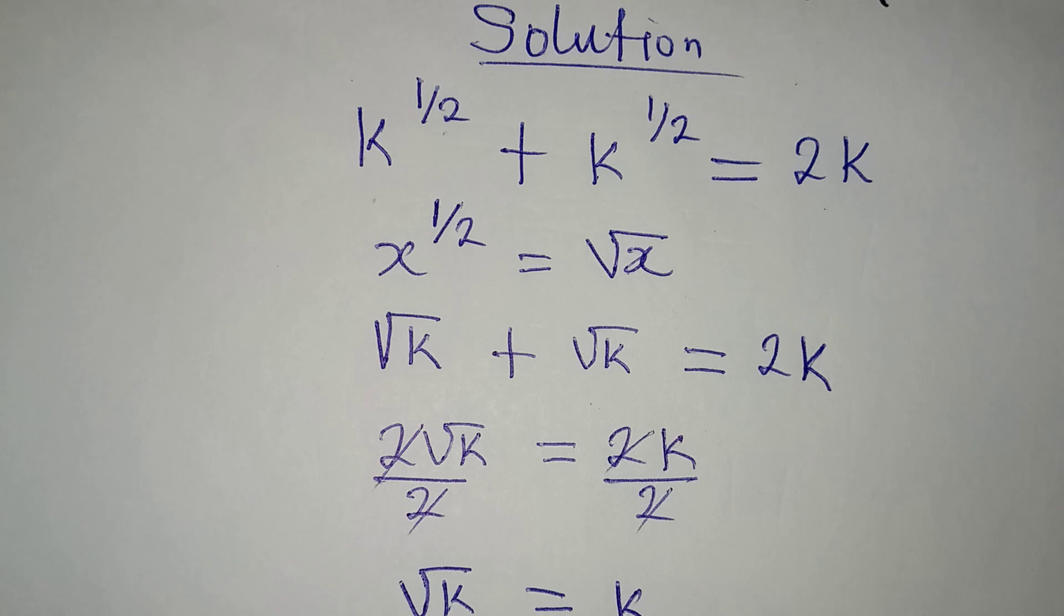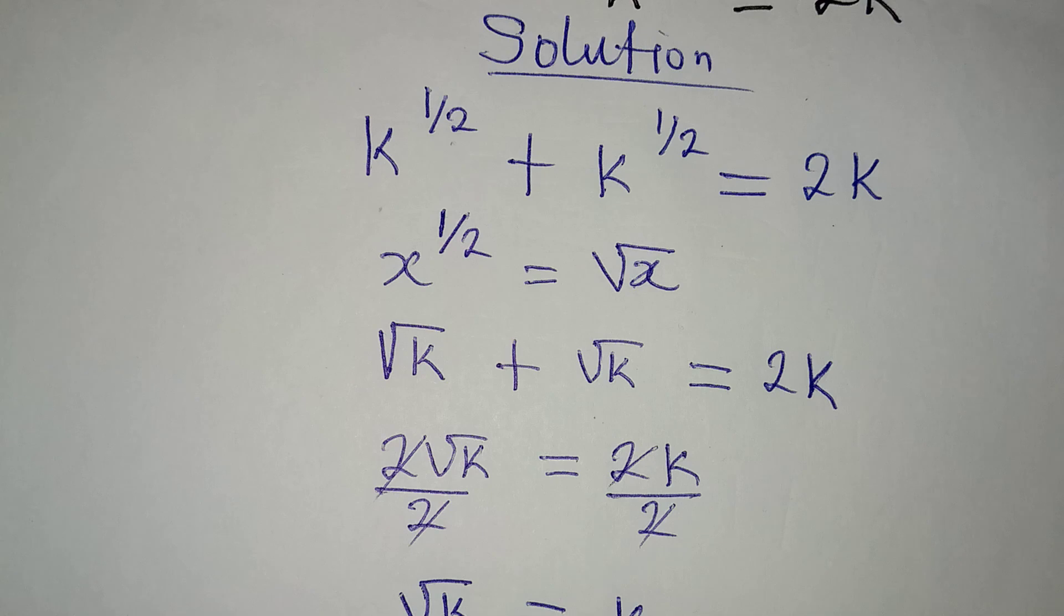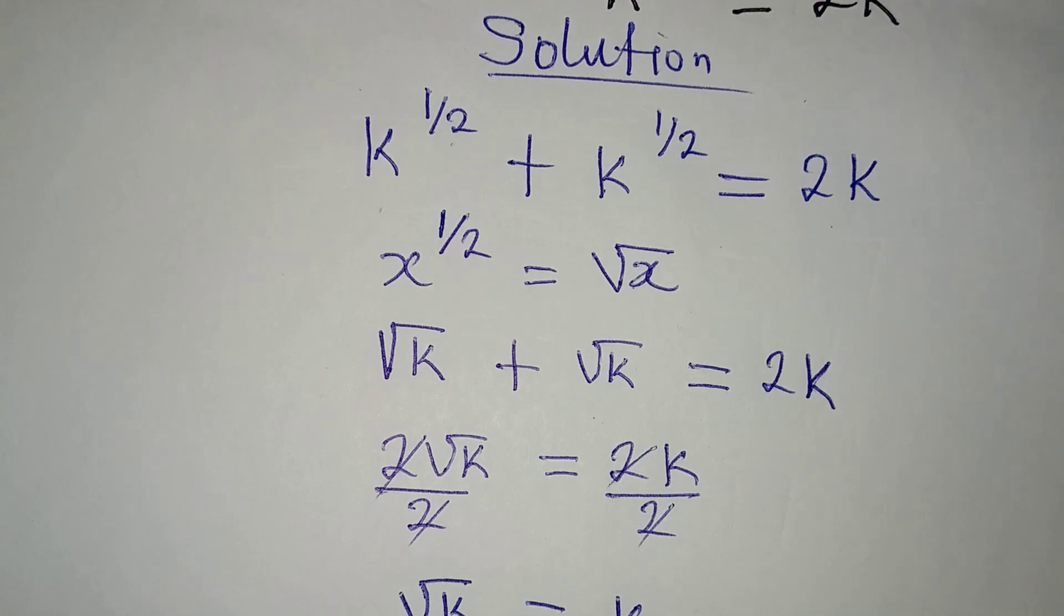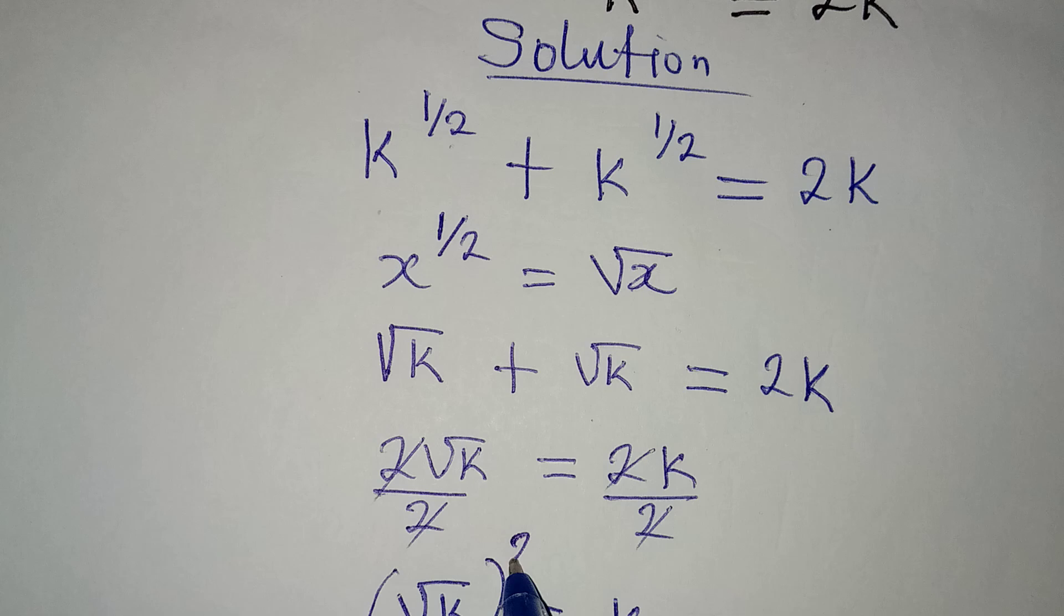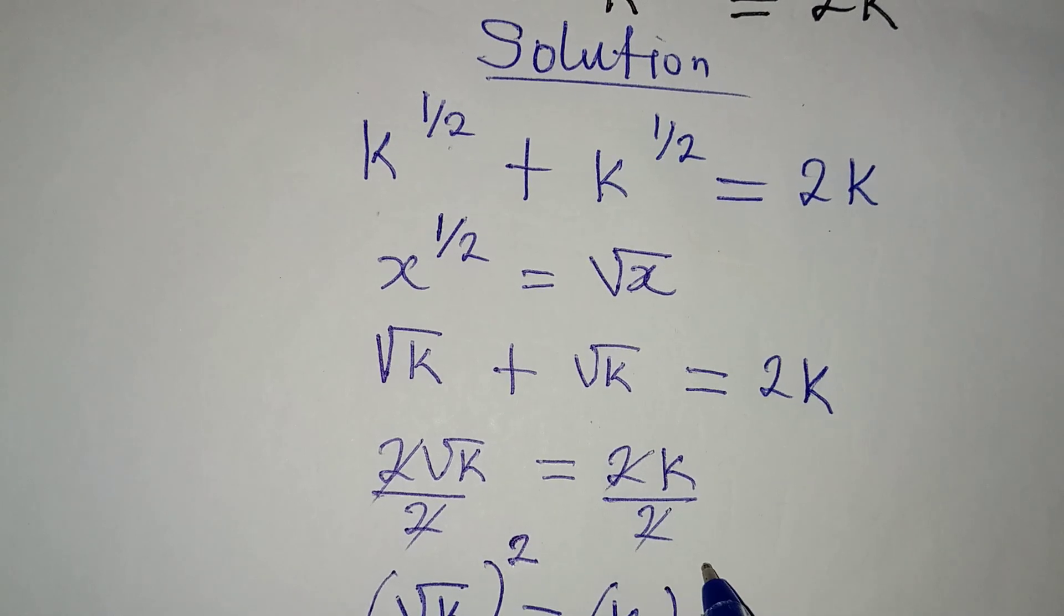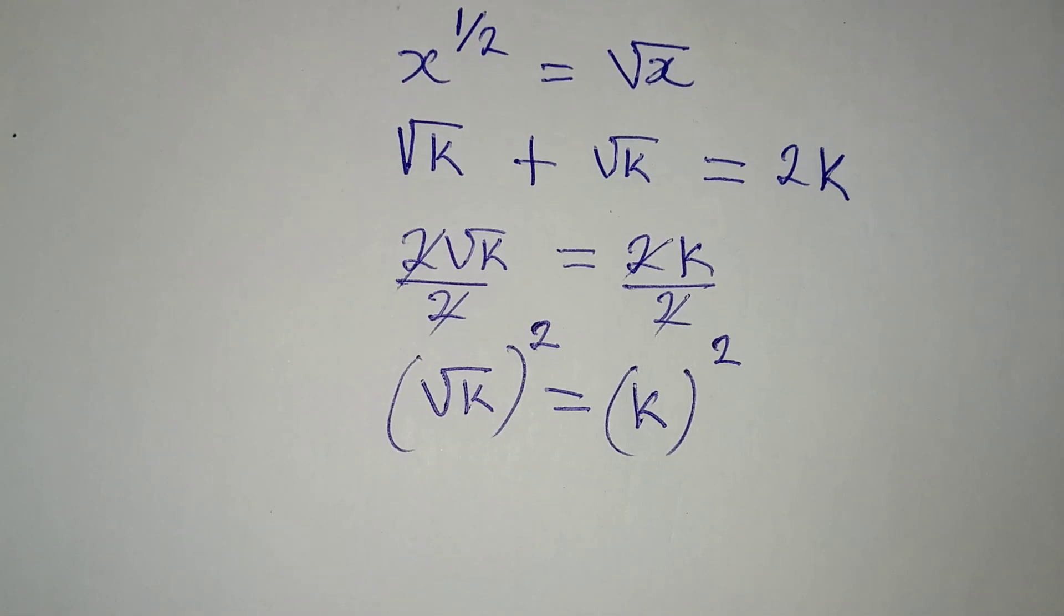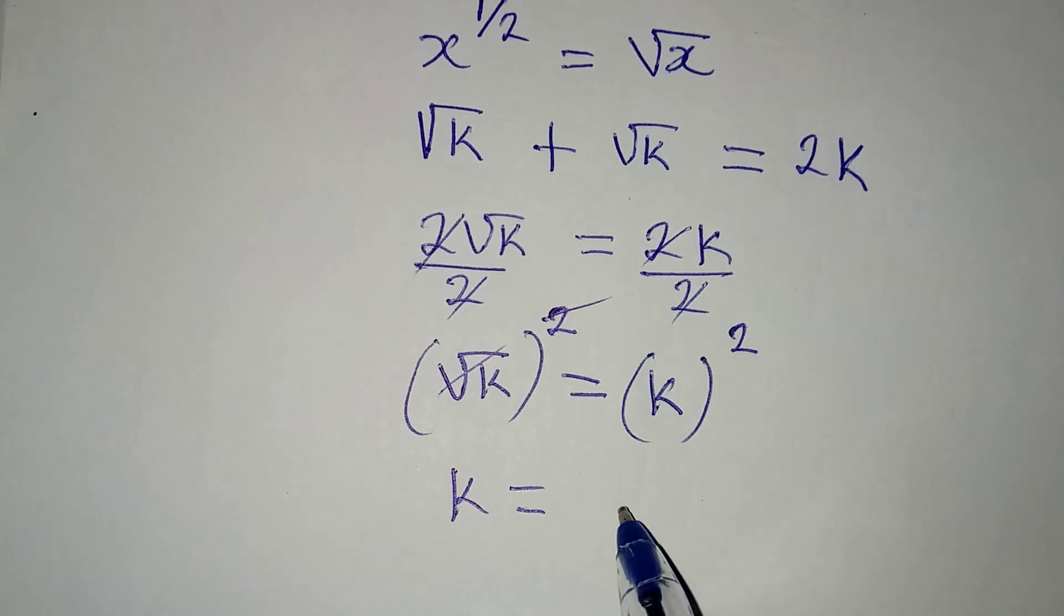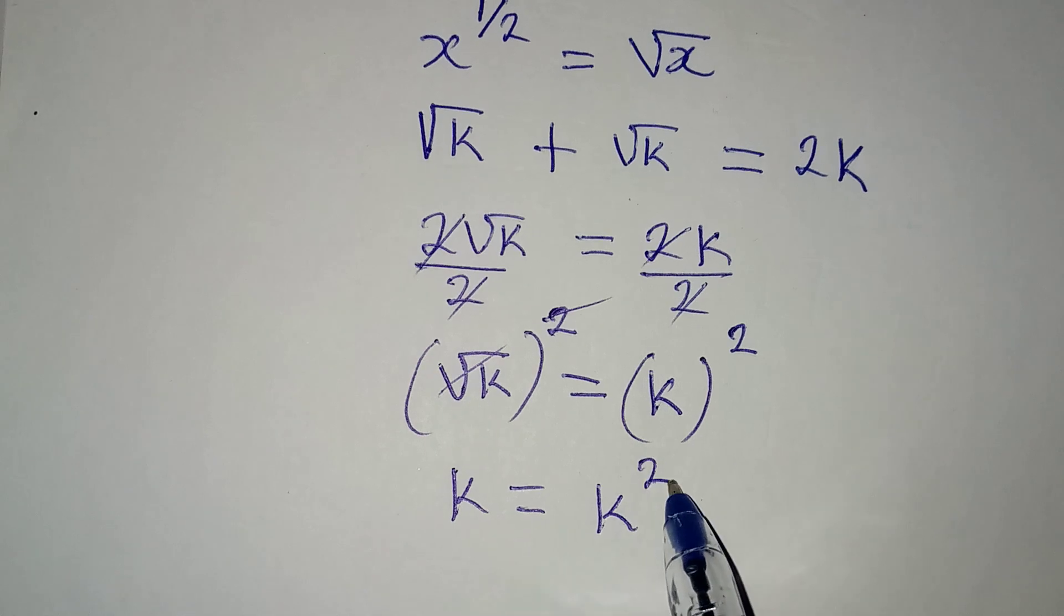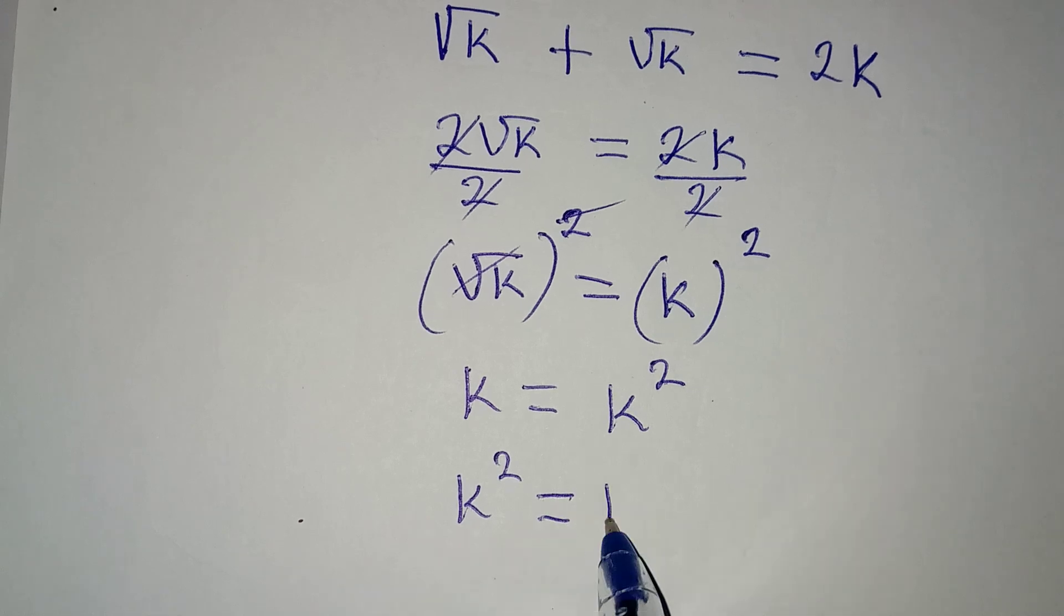So from here, what am I expected to do? To remove this square root from here, I'll have to square this side and I will also have to square this side. And then this and this will go so that k is equal to k squared, meaning that k squared is equal to k.